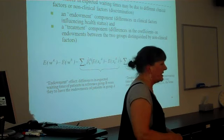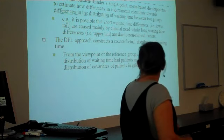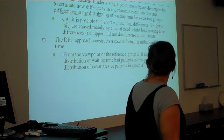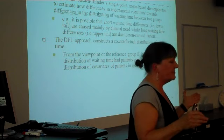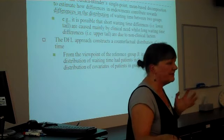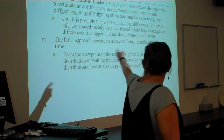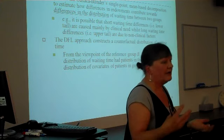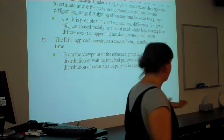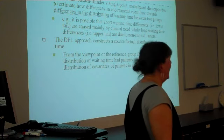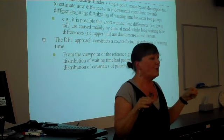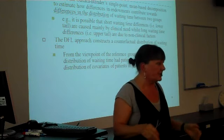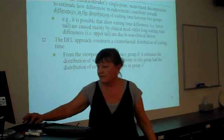So we can decompose the differences in expected waiting time into this endowment component, and then a treatment component. And we're going to use a pooled model. In the DiNardo-Fortin-Lemieux decomposition, this extends the technique of a single-point mean based on decomposition. And we're interested in what happens across the distribution. So we will get a mean result, but we want to know where the distribution is really driving differences in means, if that's what we find. In particular, it may be true that clinical need may drive things at one end of the distribution, but other factors may drive differences at the other end of the distribution. And that's indeed what we find. So what we do is we construct a counterfactual distribution in waiting time.